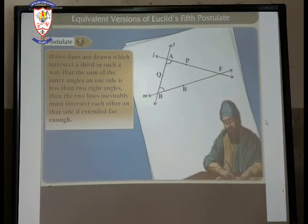Now, the next step is equivalent version of Euclid's fifth postulates. In this we are going to study about the equivalent version of fifth postulates of Euclid's. If two lines are drawn which intersect a third in such a way that the sum of the inner angles on one side is less than two right angles, then the two lines inevitably must intersect each other on that side if extended far enough. This is the equivalent version of Euclid's fifth postulates.